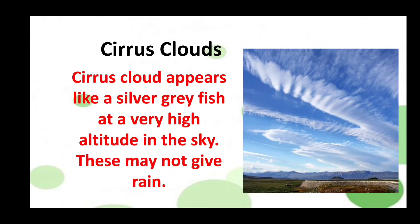Let's learn about cirrus clouds. Cirrus clouds look like a silvery grey fish and are found at very high altitude — very high up in the sky. These may not give any rainfall to the earth.